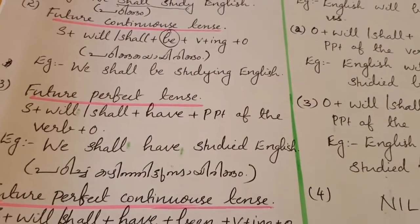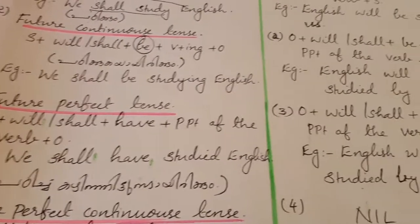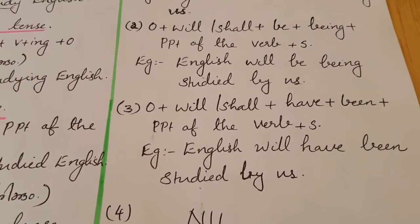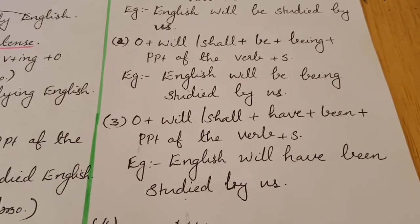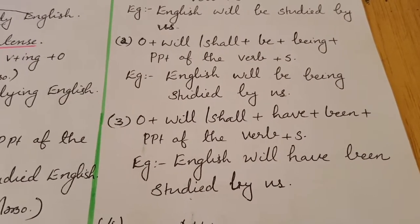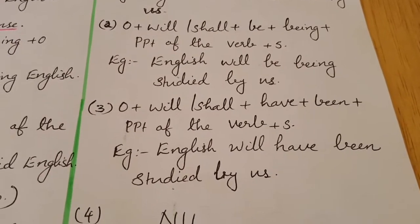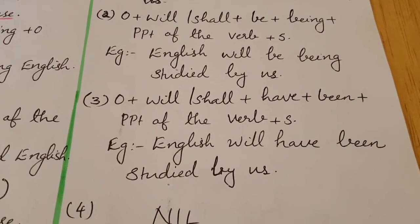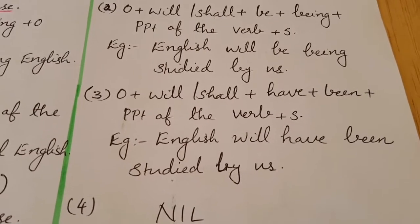Third one: future perfect tense. The active form is subject plus will or shall plus have plus past participle of the verb plus object. For passive conversion, the formula is: object plus will or shall plus have plus been plus past participle of the verb plus subject. For example: 'English will have been studied by us.'